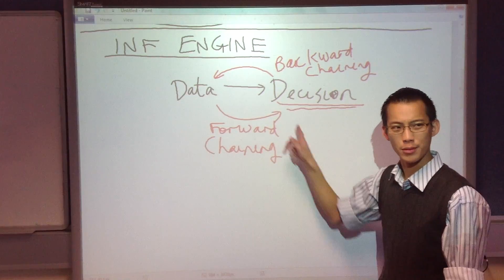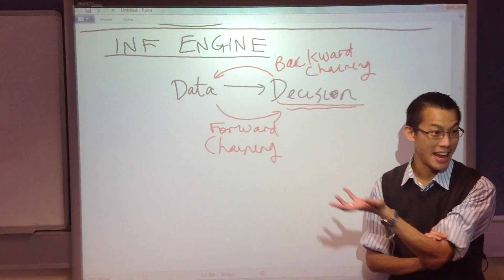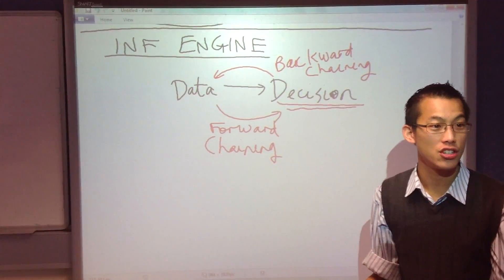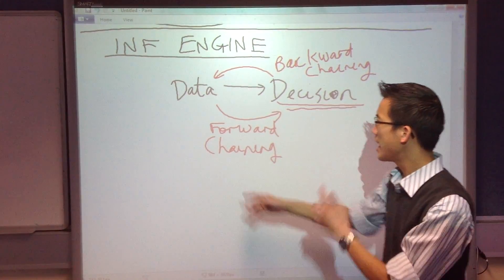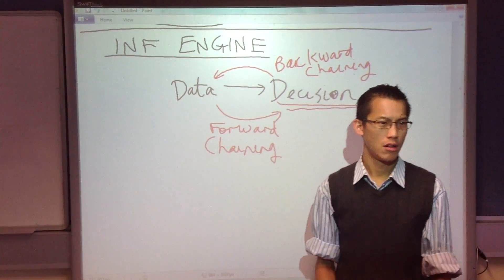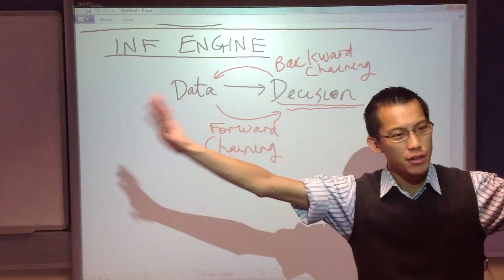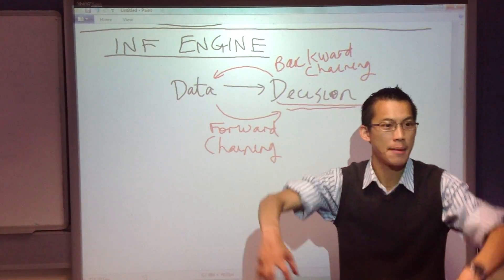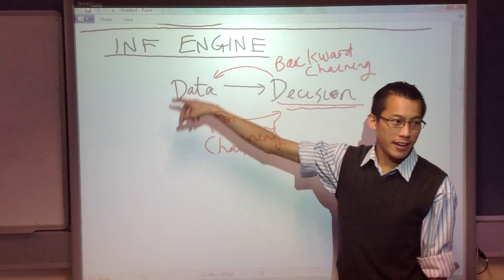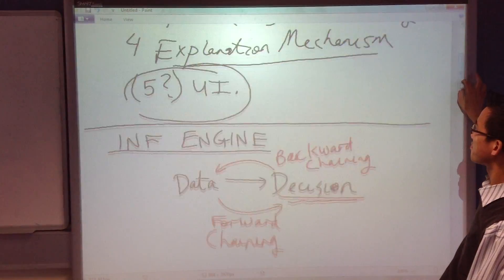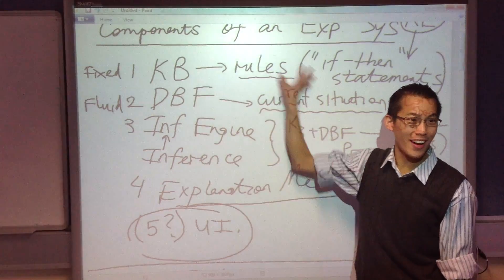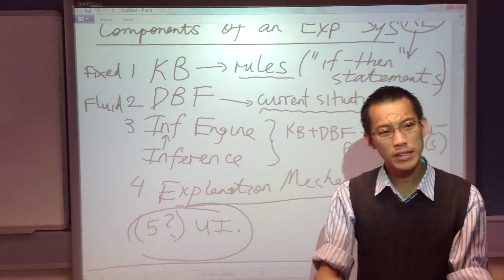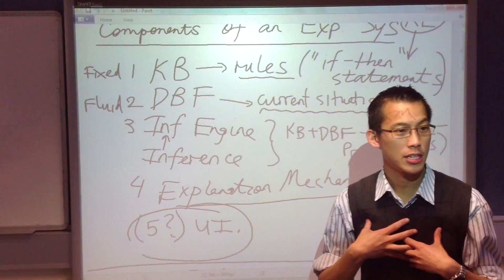That is forward chain. As the name implies, you don't start with the decision you're going to make — you might have no idea what decision you're going to make. Instead, you just start with the data. What do you know? Gather as much data as you can, just get everything. You don't know whether it's going to be relevant or not, just grab it. Once you've got all of that, try your best — combine everything you've got and see: what does this lead to? What decision or decisions might this lead me toward?